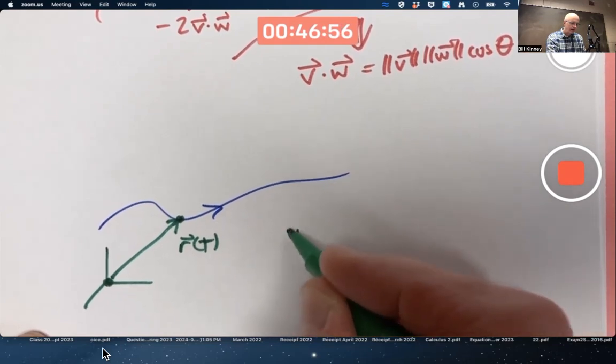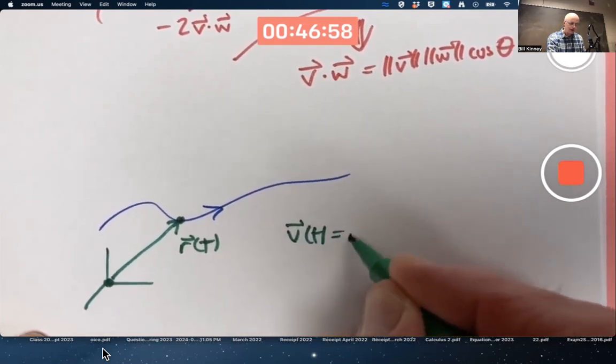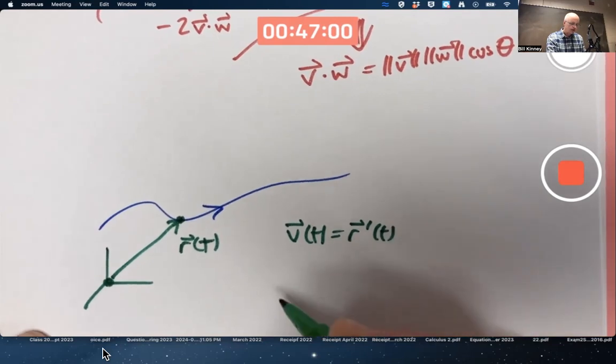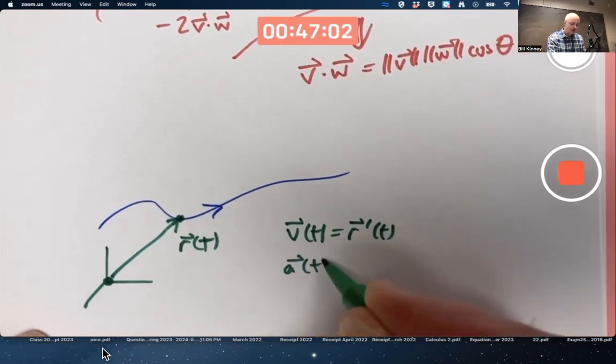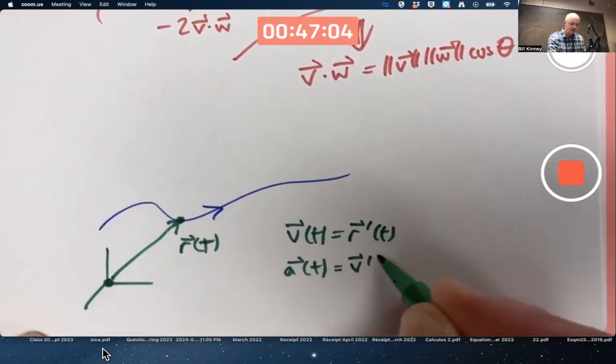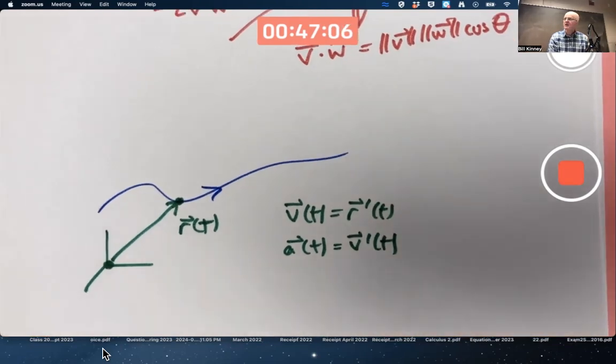We could find the velocity vector by differentiating the position vector. We can find the acceleration vector by differentiating the velocity vector.